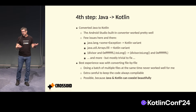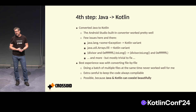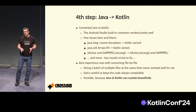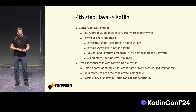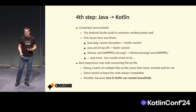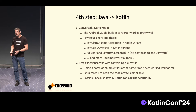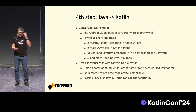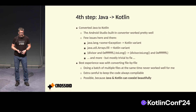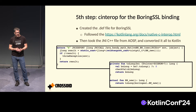The conversion was done file by file — the batch conversion didn't work that well for me. It was much easier to keep it buildable because Kotlin and Java can coexist nicely. You can have part of the project in Java, part in Kotlin, and it just continues working. Now, this was the hard part.